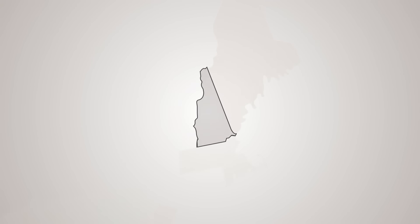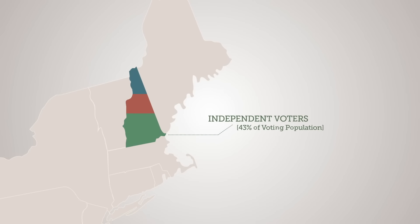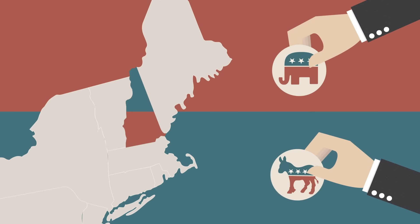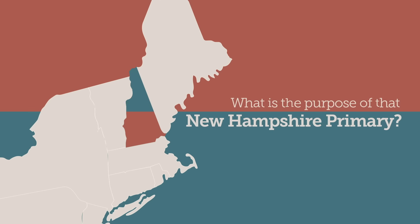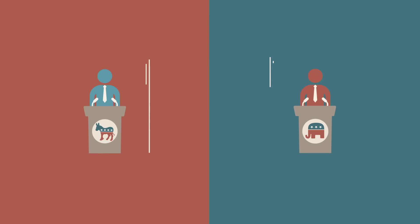Remember, we mentioned the first-in-the-nation New Hampshire presidential primary? Well, 43% of all voters in New Hampshire can't vote in that primary. If they do, they're forced to join the Republican or Democratic Party. And what is the purpose of that New Hampshire primary? It's to select a nominee for president that best represents the party, not the American people.